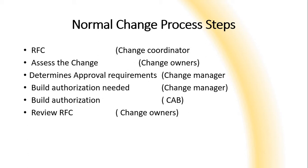The 'determines approval requirements' stage is performed by the change manager, who reviews the change to see whether a CAB meeting needs to be called. If the change is low risk and low impact, the change managers manage it themselves. If categorized as high or medium risk and impact, the CAB needs to be called for further evaluation. The 'build authorization needed' stage is also performed by the change manager.